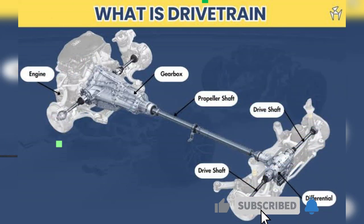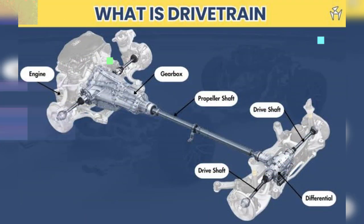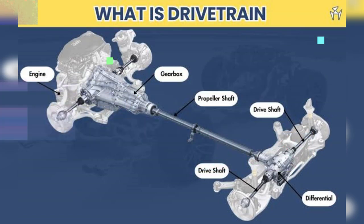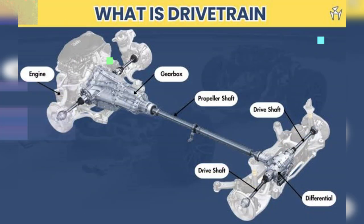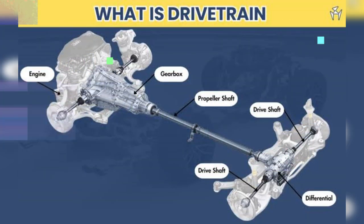The driveshaft is a rotating shaft that transmits power from the transmission to the differential. The differential splits the power from the driveshaft and distributes it to the wheels, allowing them to rotate at different speeds when cornering. Axles are shafts that connect the differential to the wheels. CV joints, or constant velocity joints, allow axles to deliver power smoothly even during steering maneuvers. Wheels are the rolling components that make contact with the road.